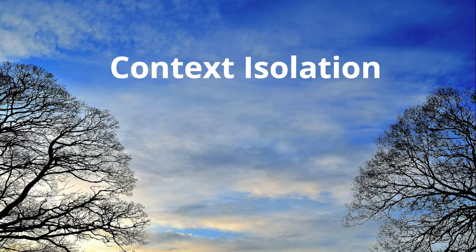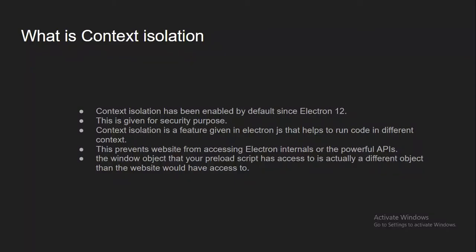Welcome to another important video. In this video we are learning about context isolation in Electron.js. Context isolation is enabled by Electron from version 12, and the main reason behind introducing context isolation was security. With the help of context isolation, we can write Electron scripts in different contexts — we'll see more about this with an example in a moment.